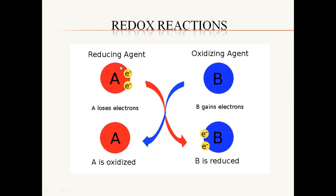As compared to this substance, this one is having the electrons. When an electron is gained, this is having the negative charge. So what is it? It is a reducing agent, because it is having the negative charge. You have a reducing agent because it has electrons. You have an oxidizing agent.